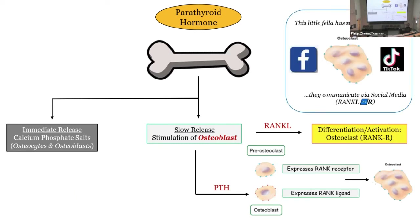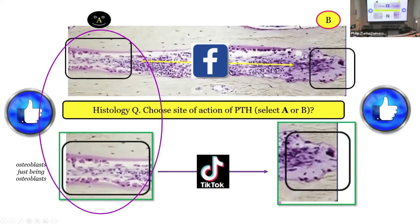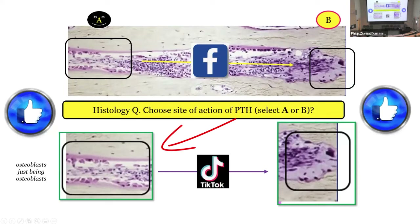The osteoclast doesn't have PTH receptors — they communicate through the social media of RANK ligand and RANK receptor. Applied histology: here's a bone metabolic unit. You have osteoclasts at the leading edge and osteoblasts sitting on top of osteoid at the trailing edge. The question is straightforward: where does PTH work? You have to identify an osteoblast versus osteoclast, then remember PTH works to stimulate the osteoblast. That's applied histology — that's how they do it on the NBME.